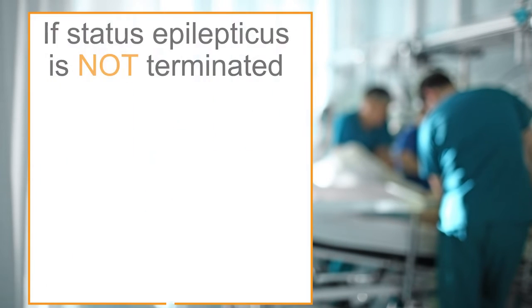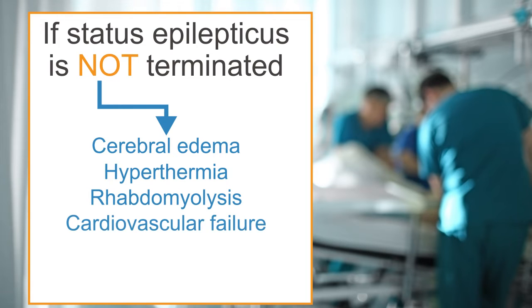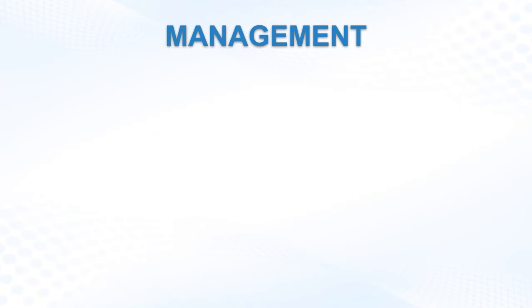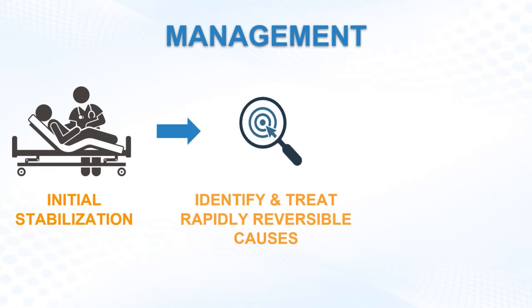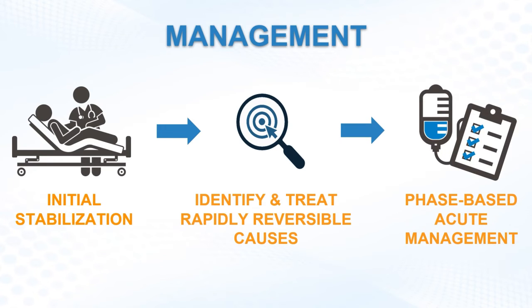Let's get back to our patient in the ED. If Status Epilepticus is not terminated, it can lead to cerebral edema, hyperthermia, rhabdomyolysis, and cardiovascular failure. Management should be initiated immediately. Management involves a three-step process: initial stabilization steps for acute seizures; identify and treat rapidly reversible causes of seizures; and implement phase-based acute seizure management.